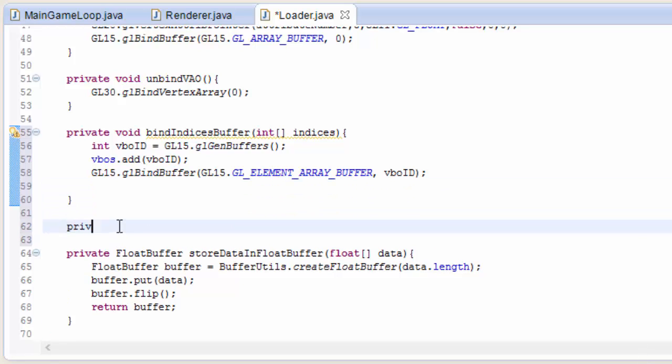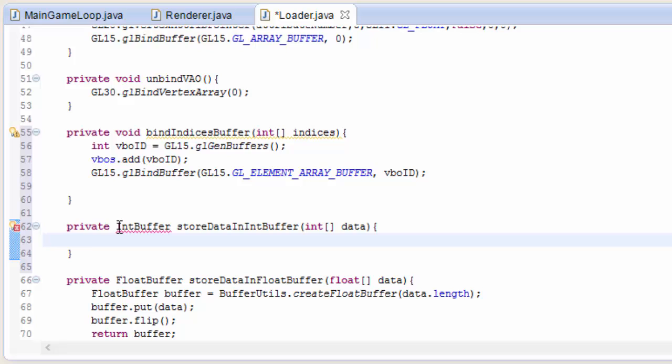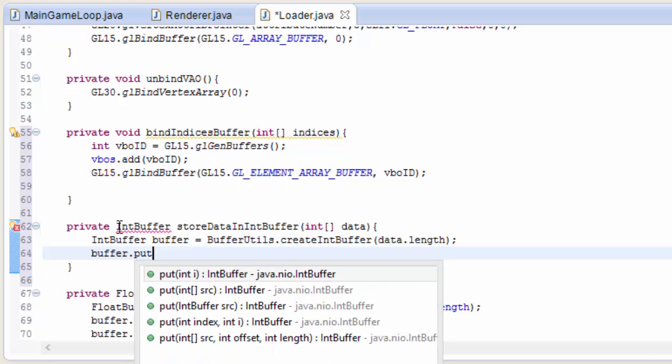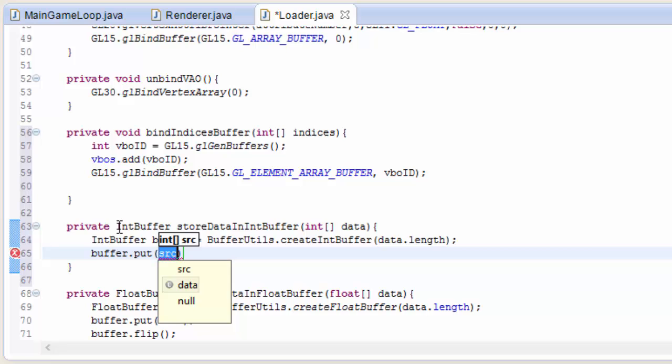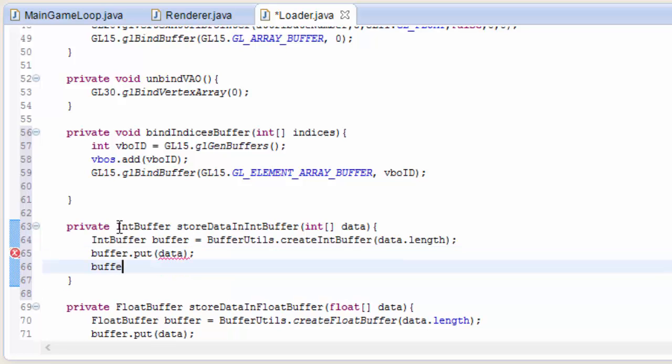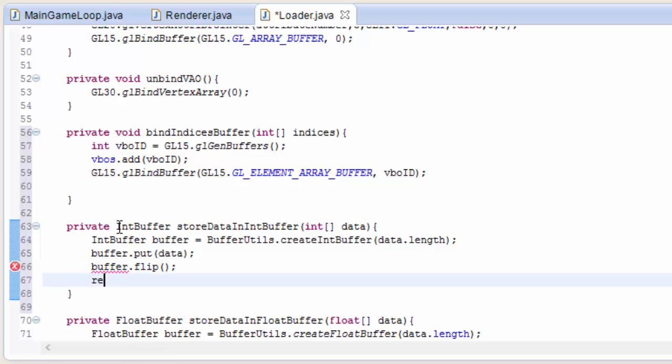Now we want to store our indices into this VBO, and just like other data had to be stored into a float buffer first, the indices have to be stored into an int buffer. So let's create a quick method here to convert our int array of indices into an int buffer that we can store into the VBO. So this is pretty similar to the floatBuffer method. First we'll create an empty int buffer by calling BufferUtils.createIntBuffer, and that needs to know the size of the data. Then we just put our data into that int buffer, and like last time we have to flip the buffer so that it's ready to be read from. And finally we just go ahead and return that int buffer.